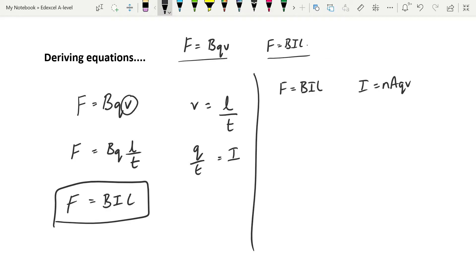So it's looking at current in terms of the flow of particles themselves through a wire, which is what we need here, because we want to take it away from general current and down into looking at the individual particles. So now if we substitute that in for i, what do we get? b, obviously, times Naqv times l.